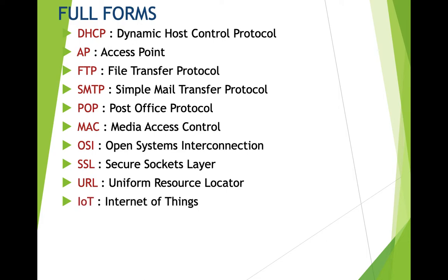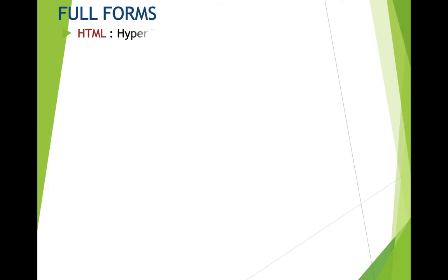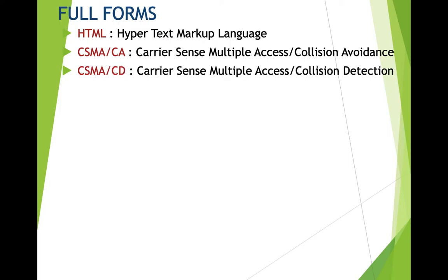Next we have URL which stands for Uniform Resource Locator. Next we have IoT which stands for Internet of Things. Next we have NIC which stands for Network Interface Card. Next we have IMAP which stands for Internet Message Access Protocol. Next we have HTML which stands for Hypertext Markup Language.